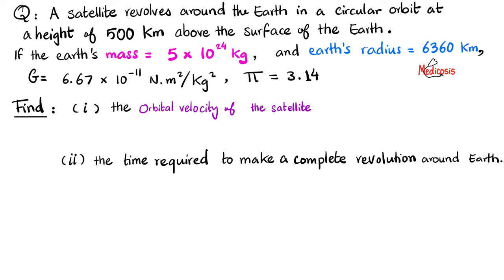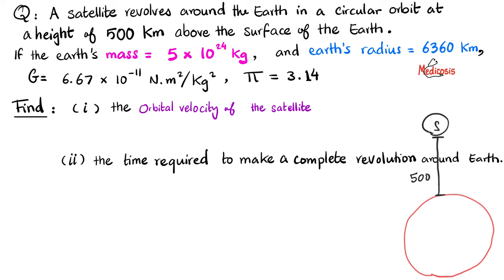Now let's solve the problem of the previous video. Please pause and take a moment to try to solve this yourself. A satellite revolves around the earth in a circular orbit at a height of 500 kilometers above the surface of the earth. Here is the earth — the satellite is 500 kilometers above the earth's surface. Remember that we need everything to be in meters, so you multiply by 10 to the power of 3 meters. The mass of the earth, m, equals 5 times 10 to the power of 24 kilograms. And the radius of the earth is 6,360 times 10 to the power of 3 meters.